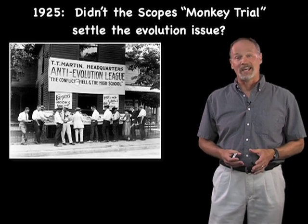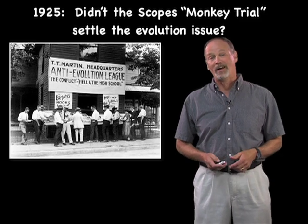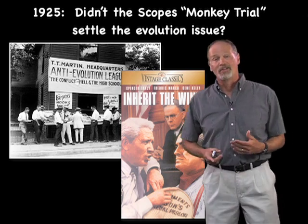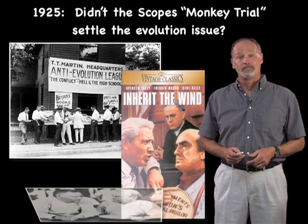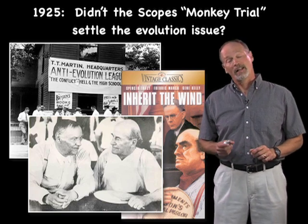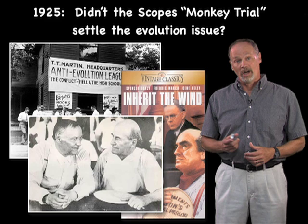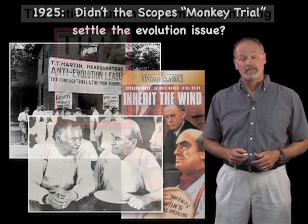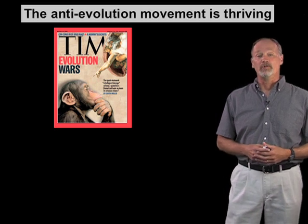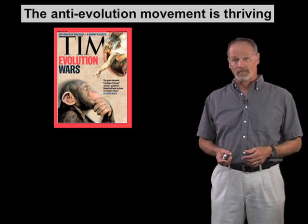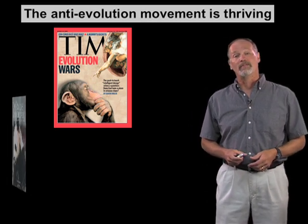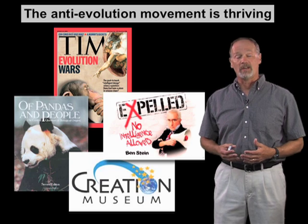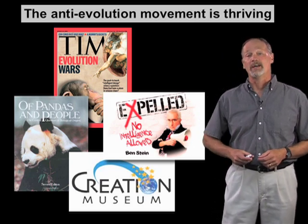A lot of my scientific colleagues ask from time to time, didn't we settle all this in 1925 during the so-called Scopes Monkey Trial? Unfortunately, what they're thinking of is the movie Inherit the Wind, which was loosely based on the Scopes Trial. The reality is that when William Jennings Bryan and Clarence Darrow squared off in that Tennessee courtroom, John Scopes was convicted, and evolution basically disappeared from science textbooks in the United States for almost 50 years. And even today, the anti-evolution movement in this country is thriving — books, pamphlets, movies, and even a museum have been opened to support the idea that evolution is fundamentally wrong.